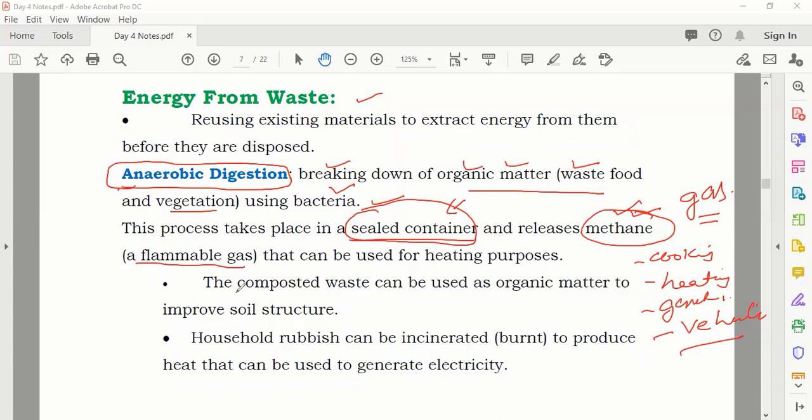Even the waste, the compost waste which comes after you get the gas—there is still waste behind—that can be used to improve the soil structure as a fertilizer. So you can use the rubbish from homes, the dead plants and all these things, and you can also take the waste from animals for this.